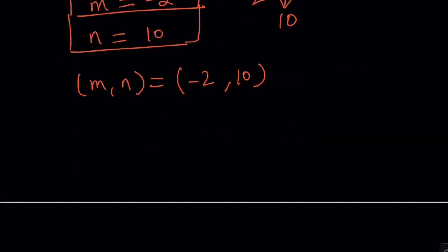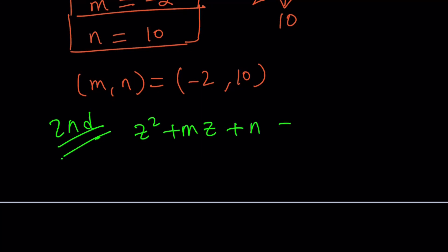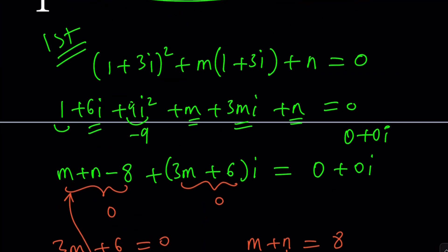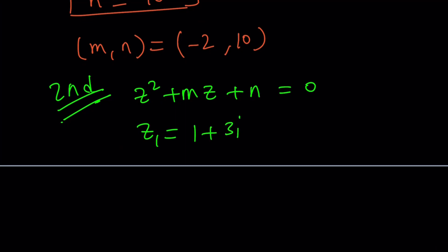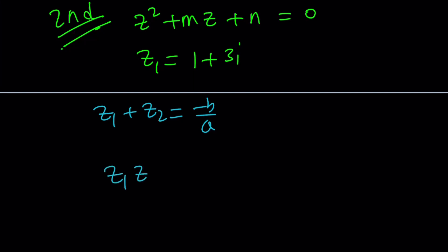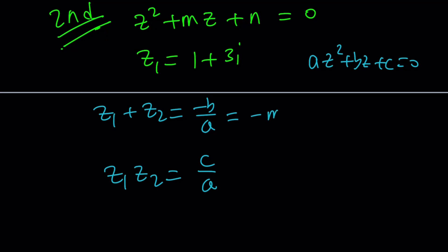For the second method, we have z squared plus mz plus n, and z₁ is 1 plus 3i. We'll use Vieta's formulas. For a quadratic az² plus bz plus c equals 0, the sum of the roots is negative b over a and the product is c over a. In our case a equals 1, so the sum of the roots is negative m and the product is n.